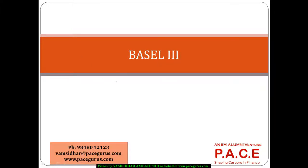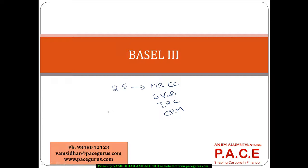Let's look at Basel 3, which is again an improvement over Basel 2.5. We know that Basel 2.5 addressed the market risk-based capital charge, introduced the concept of stressed VaR, brought in incremental risk charge, and even came out with a comprehensive risk measure to associate the default correlations between assets. Keeping that in mind, Basel 3 is majorly targeted towards credit risk and has a major focus on liquidity risk.